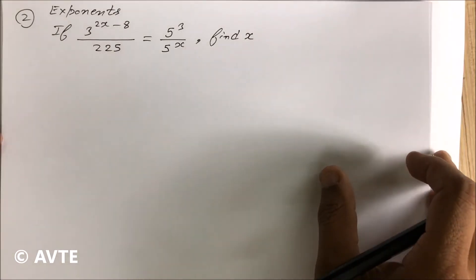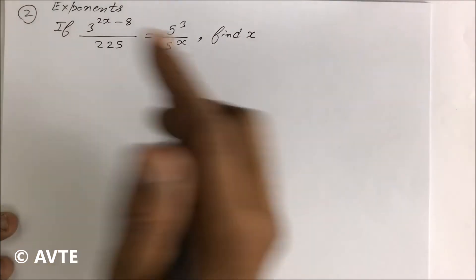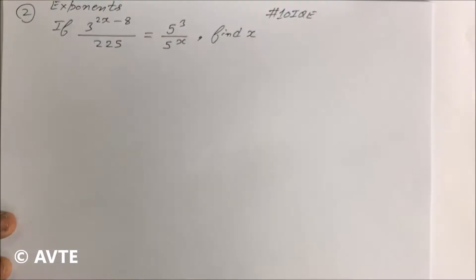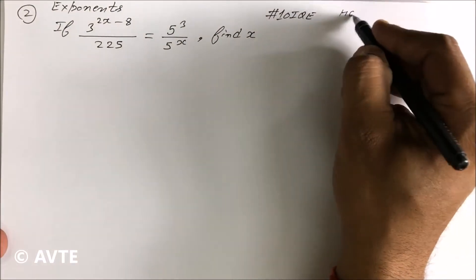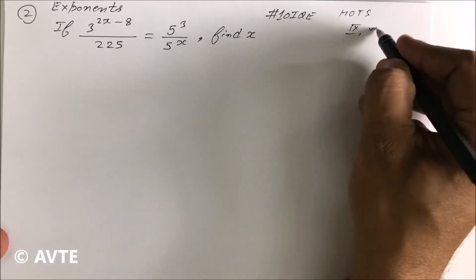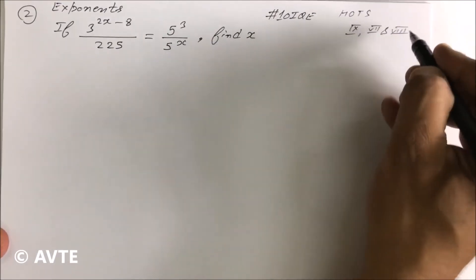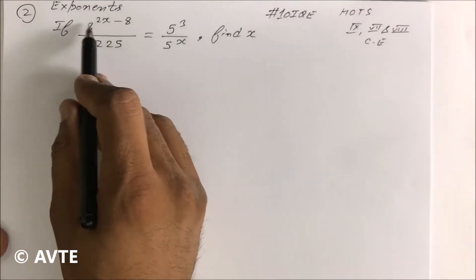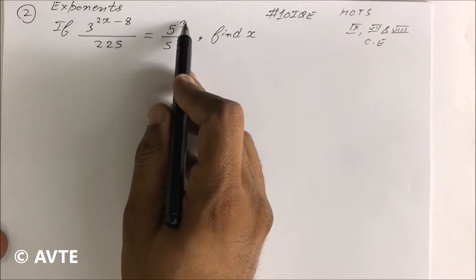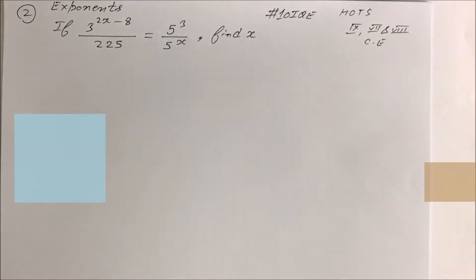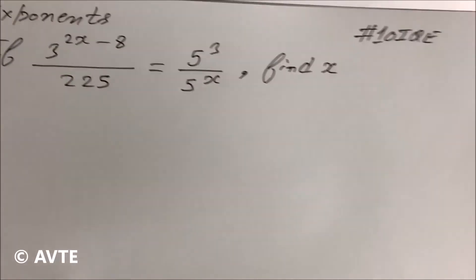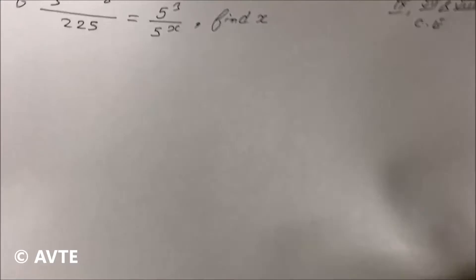Hello friends, we are doing question number two in a series of ten important questions on exponents. This question is categorized as HOTS and is important for class 9th, 7th, 8th, and other competitive examinations. The question is: 3 raised to power (2x − 8) upon 225 is equal to 5 cube upon 5 raised to power x. We have to find x.